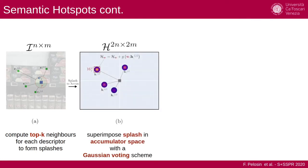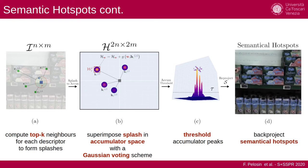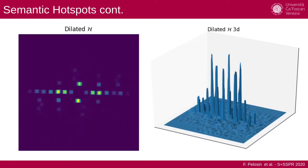So we compute these splashes for each key point, and through an accumulator space where we superimpose all these splashes, we have peak formation inside this accumulator space. This allows us to threshold and retain all the meaningful key points that we can backproject on the image plane. By thresholding and retaining all the meaningful points, we get these semantic hotspots.